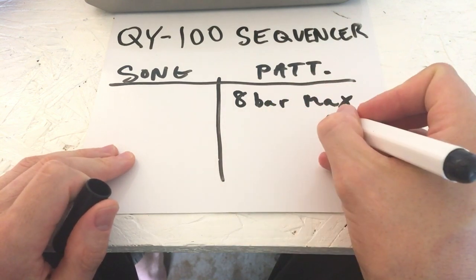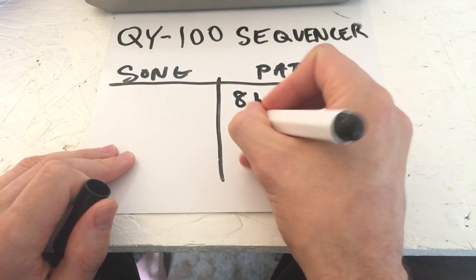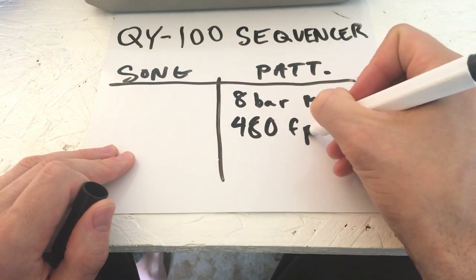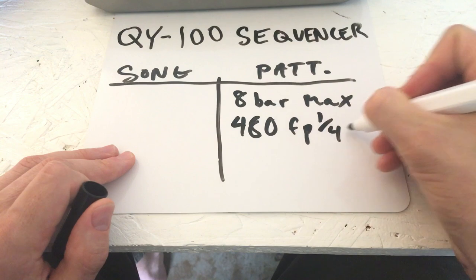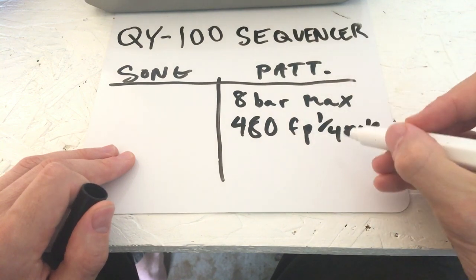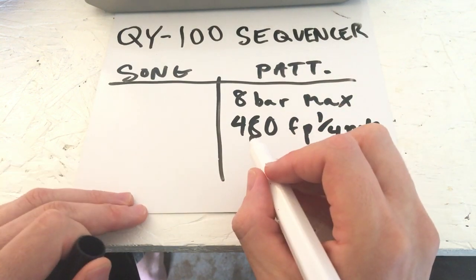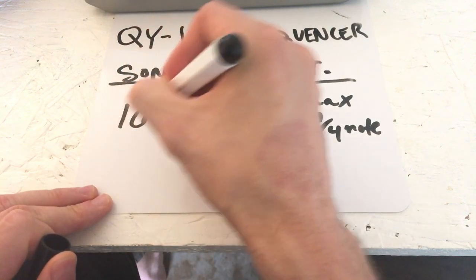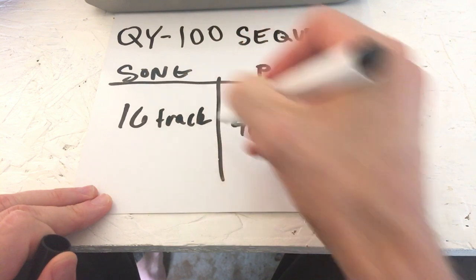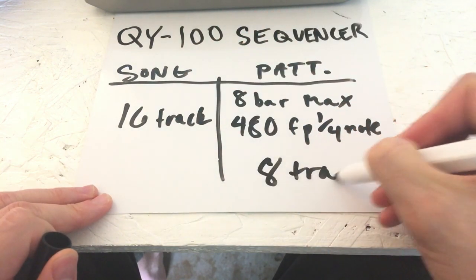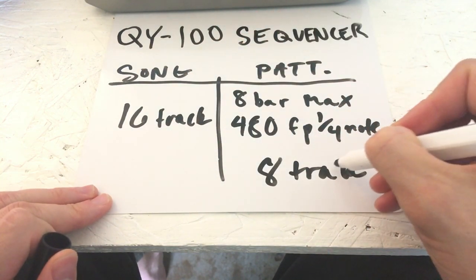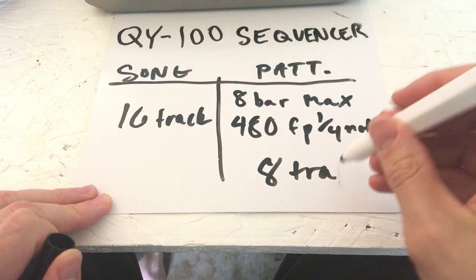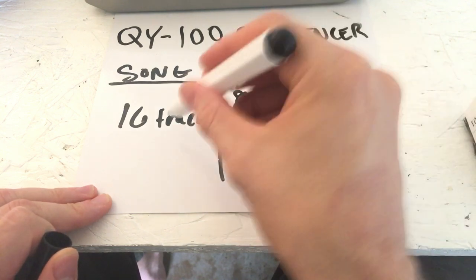We go up to 480 frames per beat or quarter note. And the other main difference between the two units I have here: this one is 16-track MIDI and this one is 8-track MIDI. It's an old-school LCD screen, which I really like for nostalgia's sake, but unfortunately it's not backlit and I can't find any good walkthroughs for how to install an LED or backlit screen without potentially damaging the unit.